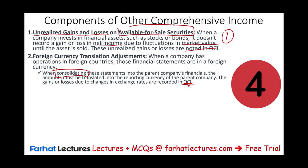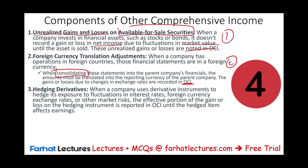The third item is hedging derivatives. When a company uses derivative instruments to hedge its exposure to fluctuations in interest rates, foreign currency, or other market risk, the effective portion of the gain or loss on these hedging instruments is also reported in OCI until the hedged item affects earnings. We are talking here about cash flow hedges. Certain hedging items are also reported there, and we will cover unrealized gain or loss, foreign currency translation, hedging activities, and pension plan adjustments each separately.